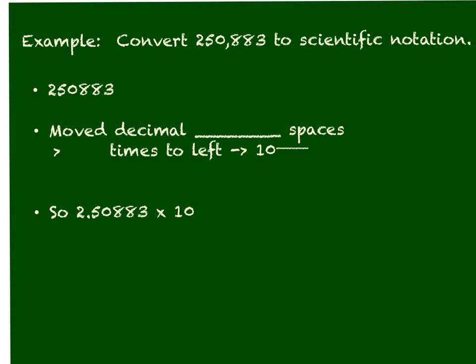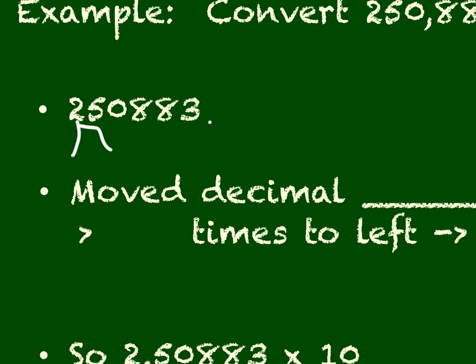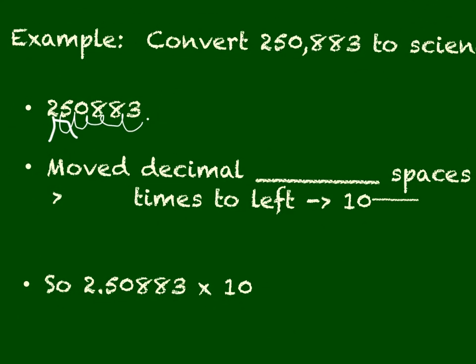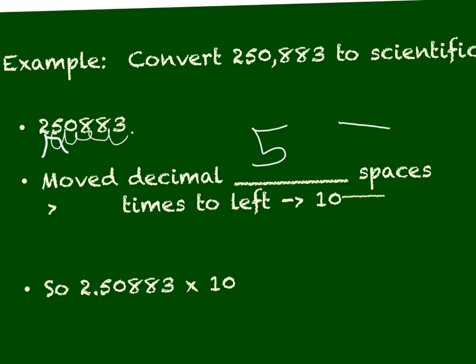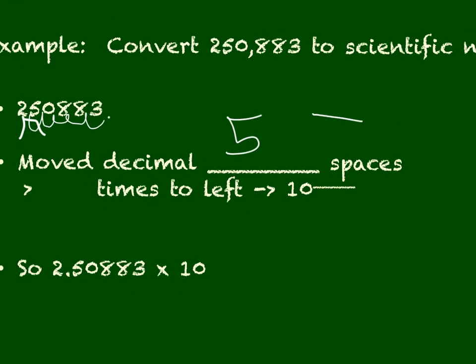So here we have 250,883. So to write this in scientific notation, again I have my decimal place here after the 3 and I want to move it so that it is between the 2 and the 5 there. So I will have to move that and again count the spaces. If you start to count the spaces here, we move it 1, 2, 3, 4, 5 in this case. So we've moved our decimal place 5 spaces.